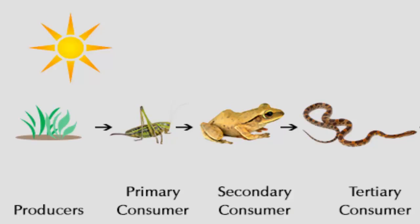So this is an example of a food chain. There is a producer, primary consumer, secondary consumer, and a tertiary consumer.